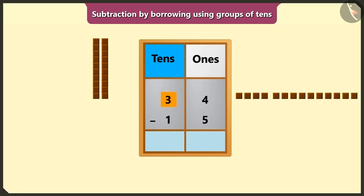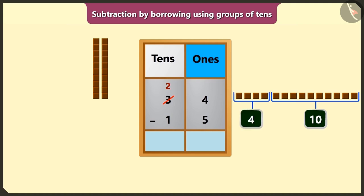So if we subtract 1 tens from 3 tens of box of tens, then we would have 2 tens. We will write 2 at the top of the box of tens. Now we will have 1 borrowed 10 means 10 ones plus 4 ones equal to 14 ones in the box of ones.